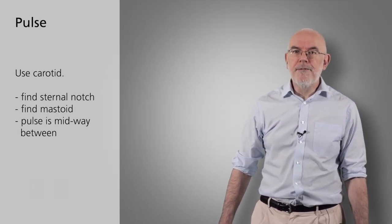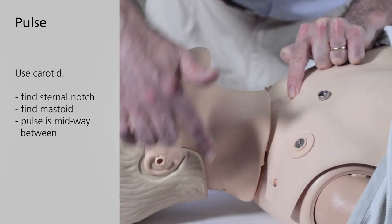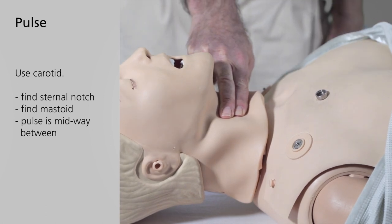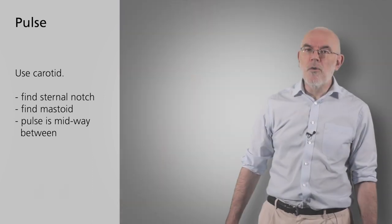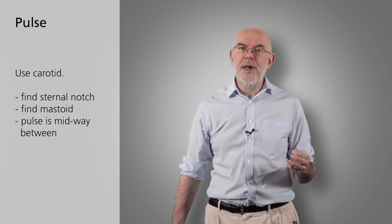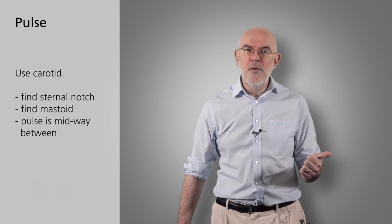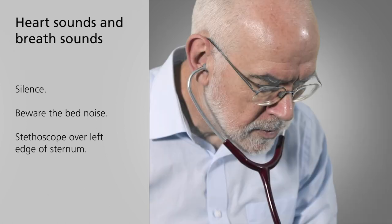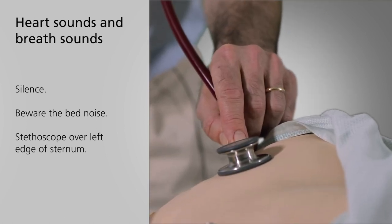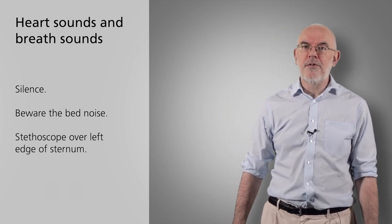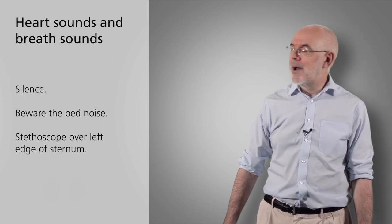To find the carotid pulse, start at the sternal notch, put a finger there, then put another finger on the mastoid process — midway between the two is the sternocleidomastoid strap muscle. Put your fingers underneath that and you would normally find a pulse; here you're feeling for its absence. Use your fingers, not your thumb, because you have a pulse at the end of your thumb that you may confuse with the person's. For heart and breath sounds, listen on the left-hand side of the sternum — you can check for both at the same time. Don't worry about repositioning the stethoscope; if breath sounds are absent in one area, they'll be absent throughout.